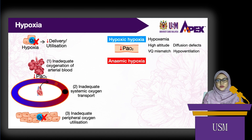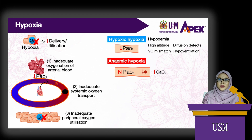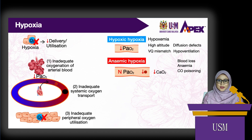Anemic hypoxia is characterized by normal arterial pressure of oxygen, but low total oxygen content of arterial blood. It can be due to an inadequate number of erythrocytes or hemoglobin, or competition for the hemoglobin molecule by other compounds such as carbon monoxide. The probable causes are blood loss, anemia, or carbon monoxide poisoning.